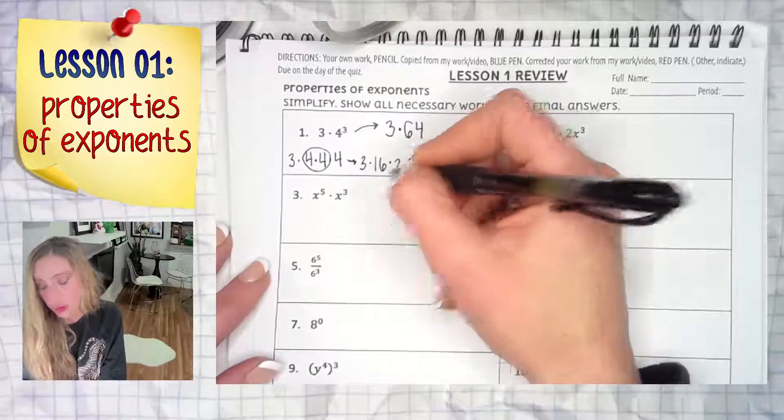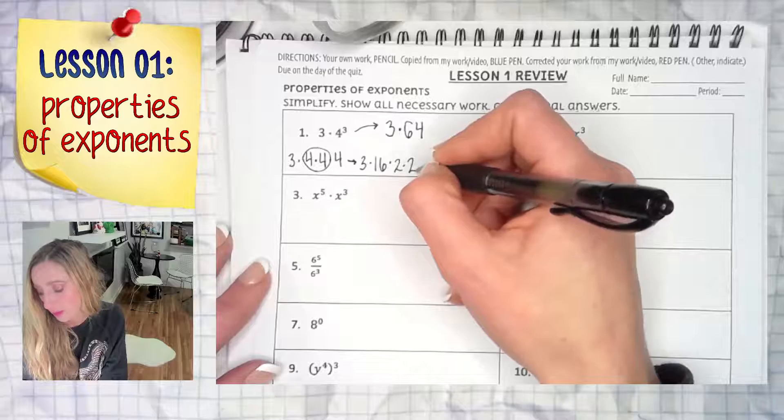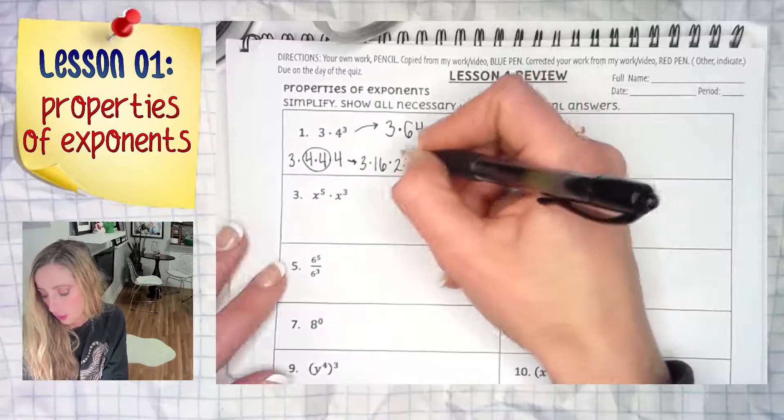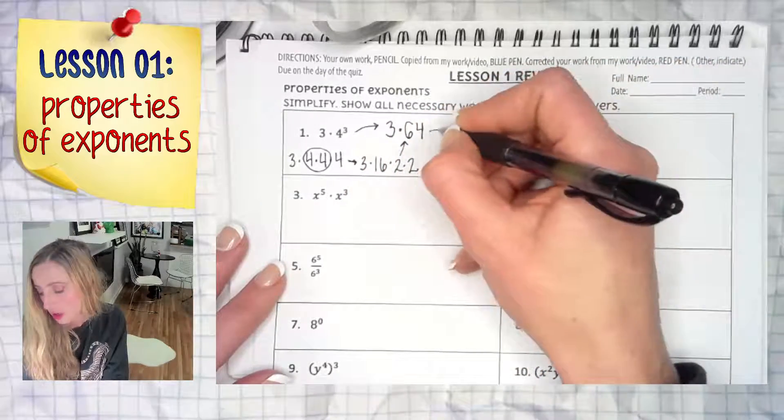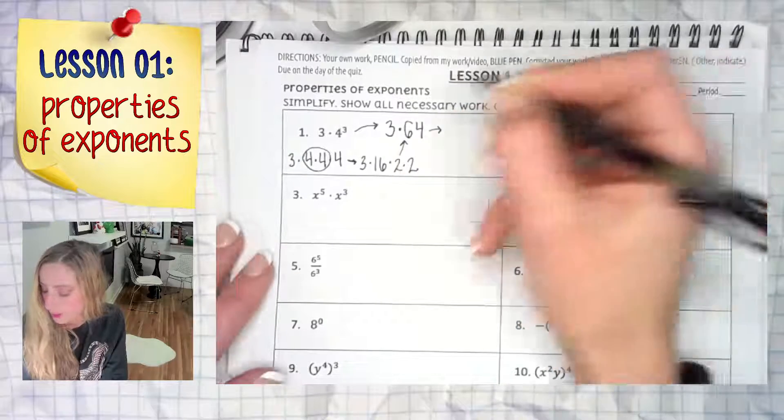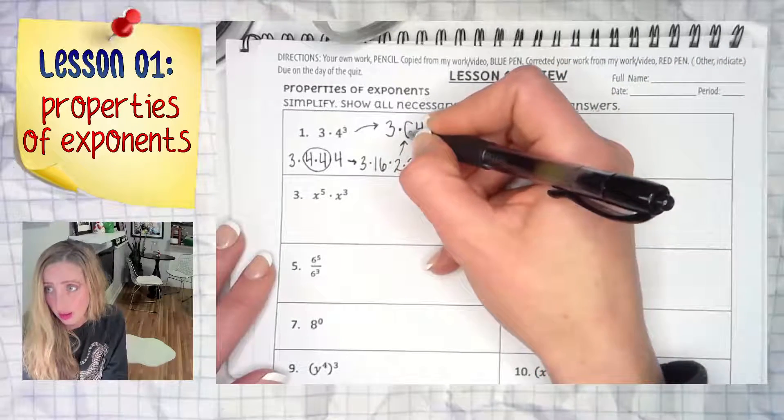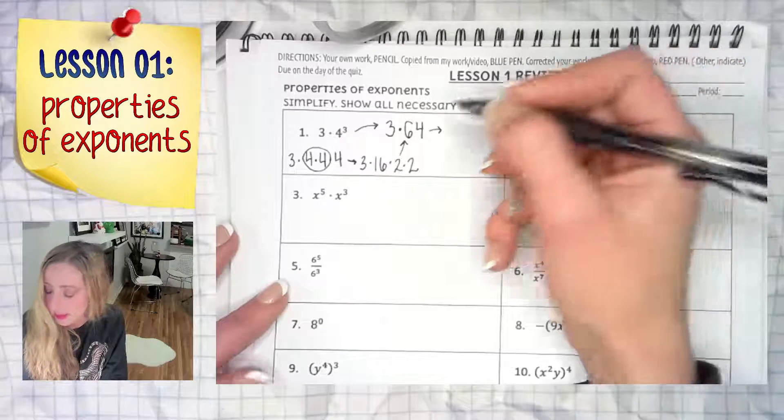Now in either case, we have 3 × 64. Whether on paper or in your head, 3 × 60—well, 3 × 6 is 18, so 3 × 60 is 180.